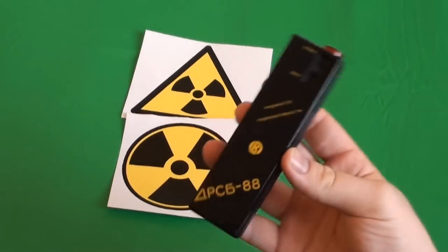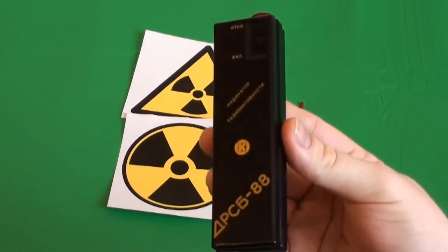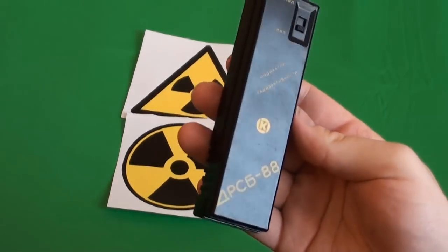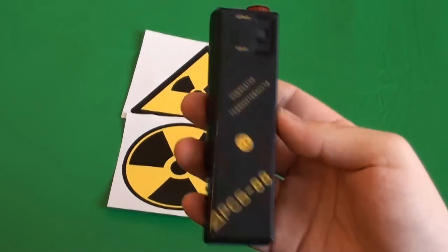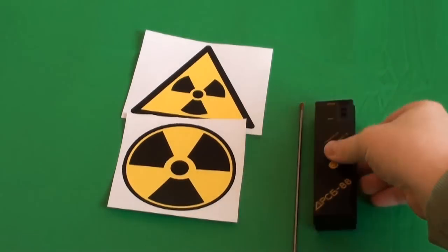Okay, so that's it. That's DRSB-88, a really cheap radioactivity detector which you can buy on eBay. And that's about it. Bye!